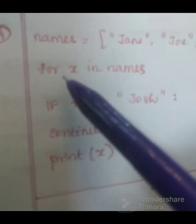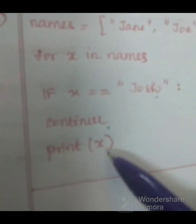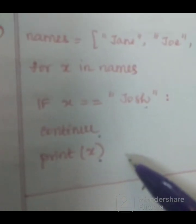Let's continue. The same program. Names equal to Jane, Joe, Josh and Jeremy. Same program, for x in names, if x equal to Josh, continue, print x. So in this case, what is continue?